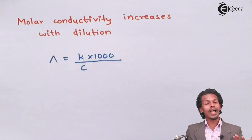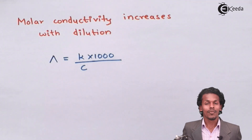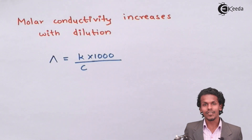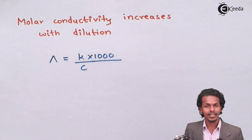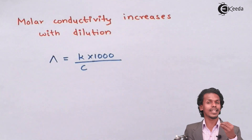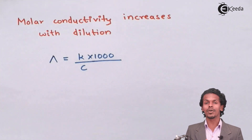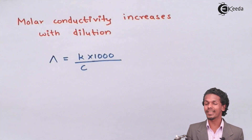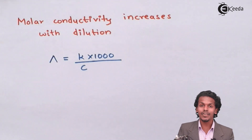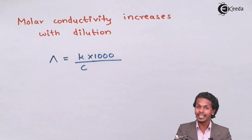If the number of ions keeps increasing, the conductivity will also keep increasing. For example, when an electrolyte dissociates, it dissociates into cations and anions. As the electrolyte is dissolved in aqueous solution, the number of ions present in a unit volume increases, and because of this, the conductivity — the value of κ — also increases.